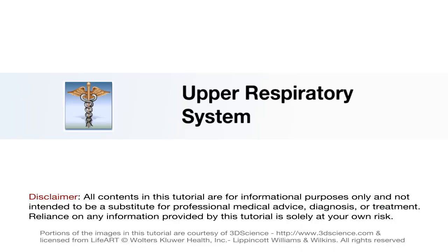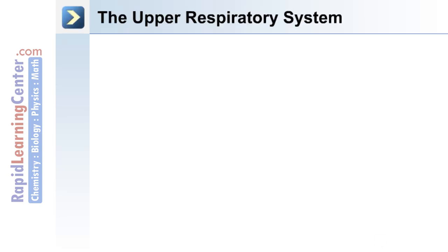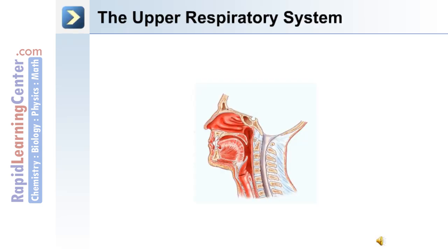Now let's move on to discuss the first major division or section of the respiratory system, the upper respiratory system or tract. We'll discuss the nasal passageways as well as the pharynx. We'll use this image to describe the structures of the upper respiratory system.